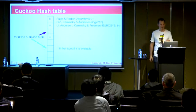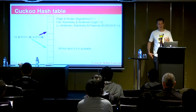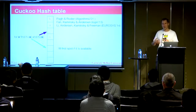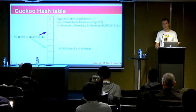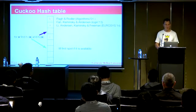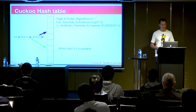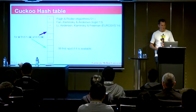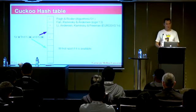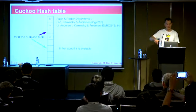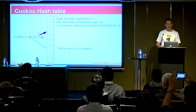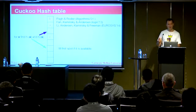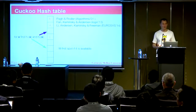In 2001, Pagh and Rodler suggested something called a cuckoo hash — a very ingenious alternative. It's basically an application of what's called the 'power of two choices' type of algorithms that Broder and Mitzenmacher analyzed around that time. I'll quickly walk you through how it works. It's super simple, and once you get the idea it's very sweet. We want to insert X into this hash table — note, no pointers anymore, just a table. We compute two different hashes: hash 1 (purple) and hash 2 (green).